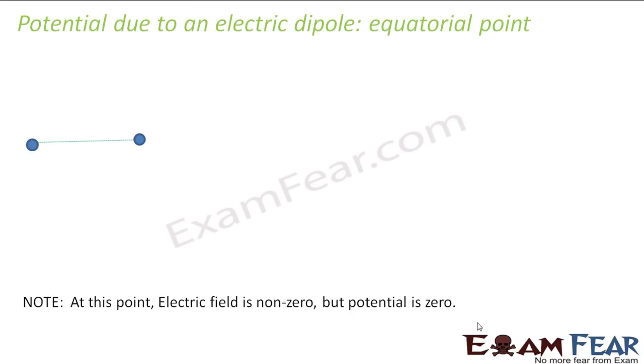In a very similar way, we will now calculate the potential due to an electric dipole at an equatorial point. So here you can see this is the dipole. Let us say this is plus q, this is minus q. Let us call this point as A and this point as B.